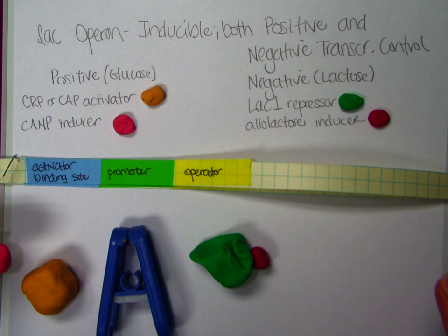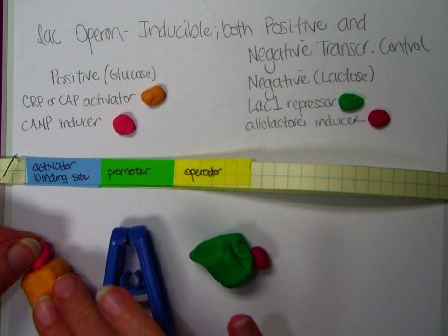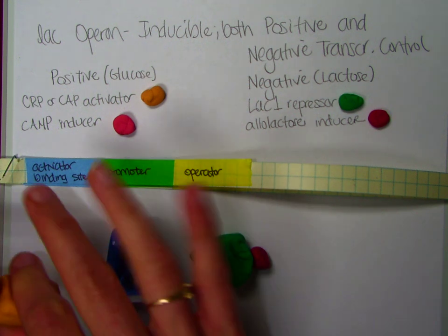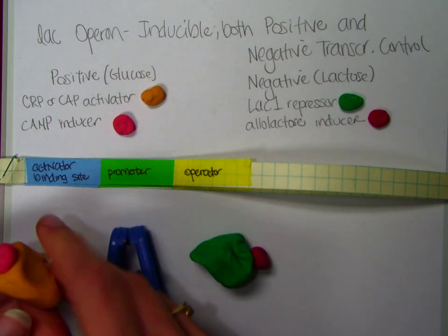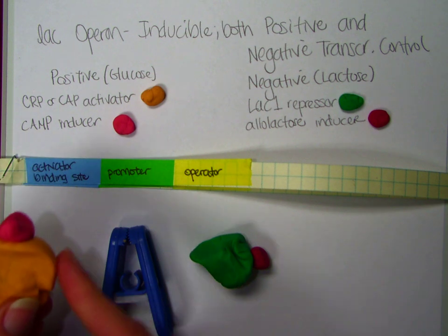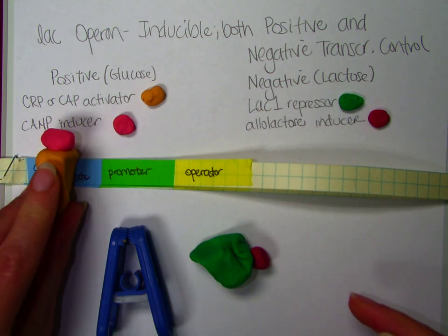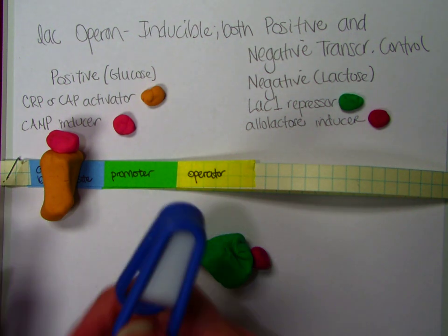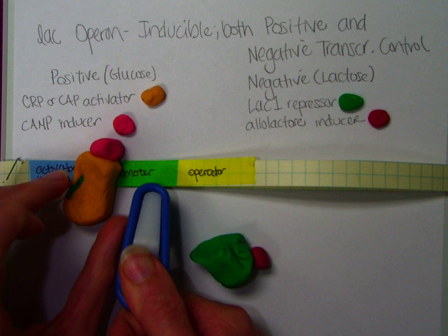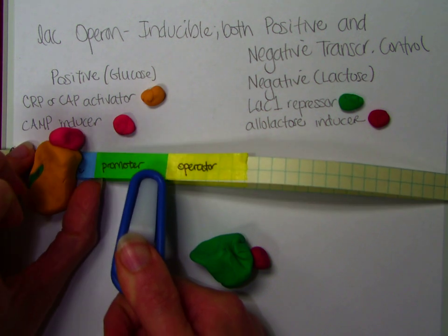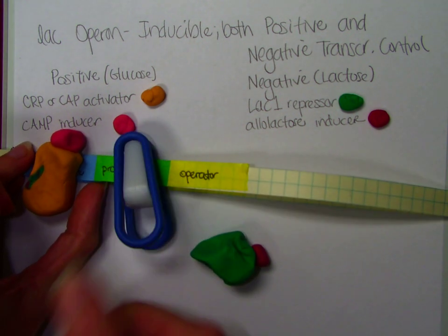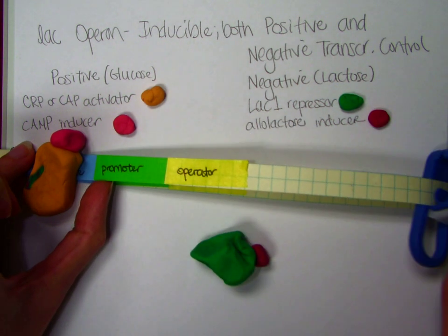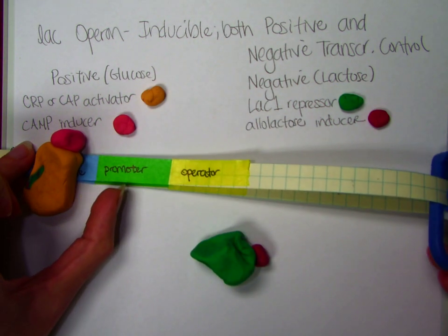And so the cyclic AMP inducer is going to bind to this inactive activator and change its shape. This changed shape activator is going to then bind to the activator binding site. The RNA polymerase then says, aha, and it can easily find the promoter, attach to it, and then move down and transcribe the lac operon.